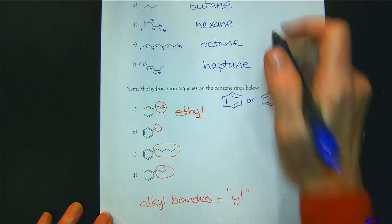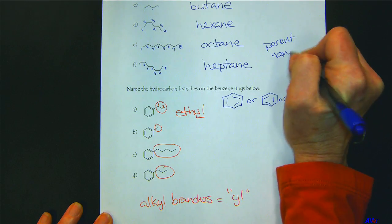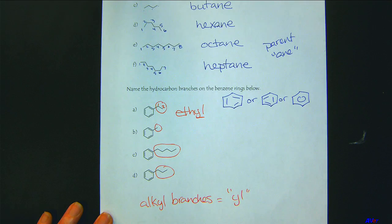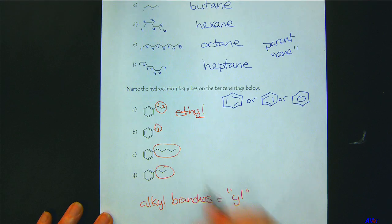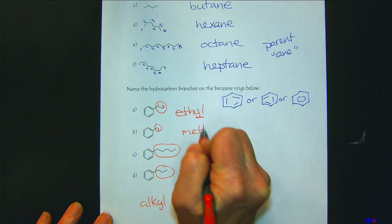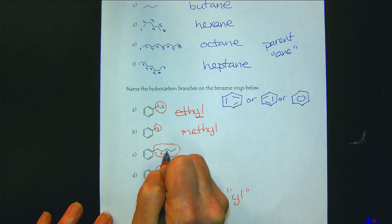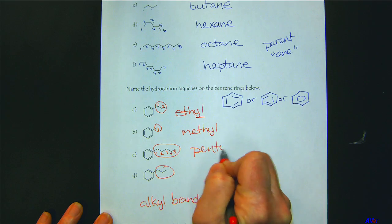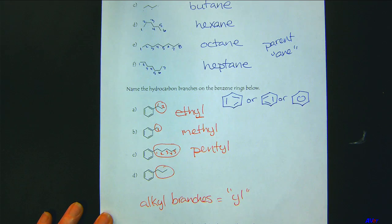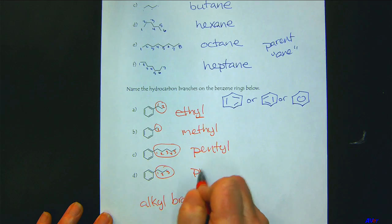When it was the parent, we had the '-ane' ending. As branches: there's just one carbon on this branch, so we describe that as a methyl branch. One, two, three, four, five — this would be a pentyl branch. And one, two, three — propyl.